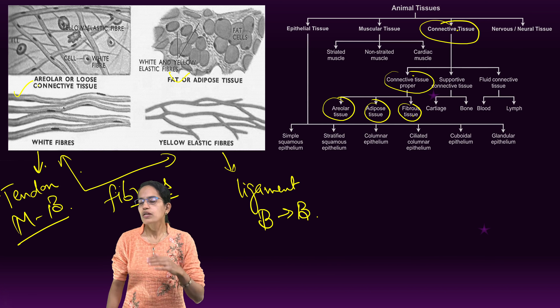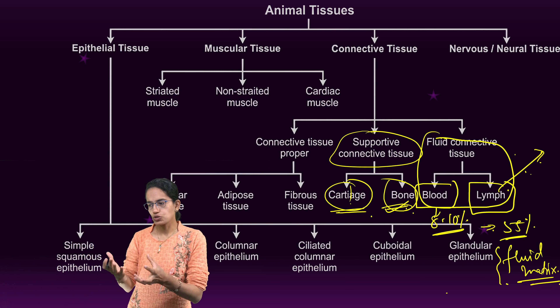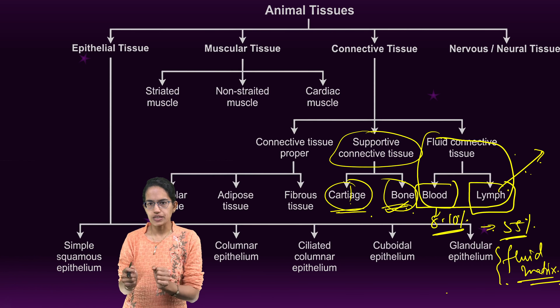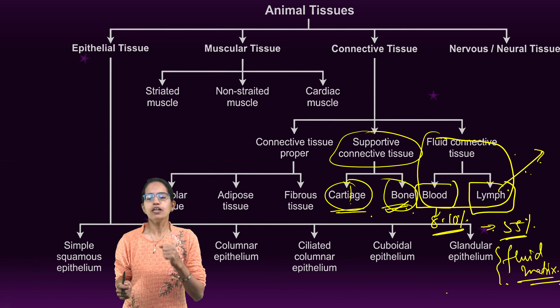The next type is supportive connective tissue, which includes bones and cartilage. Bone is mainly made up of calcium and phosphate. Within the bone lies the marrow cavity where bone marrow produces blood cells — this is especially prominent in long bones. Cartilage is an elastic material containing chondrons with chondrocytes, which provide flexibility and elasticity. Examples include cartilage in the ear and nasal septum. Cartilage provides support and flexibility to these structures.